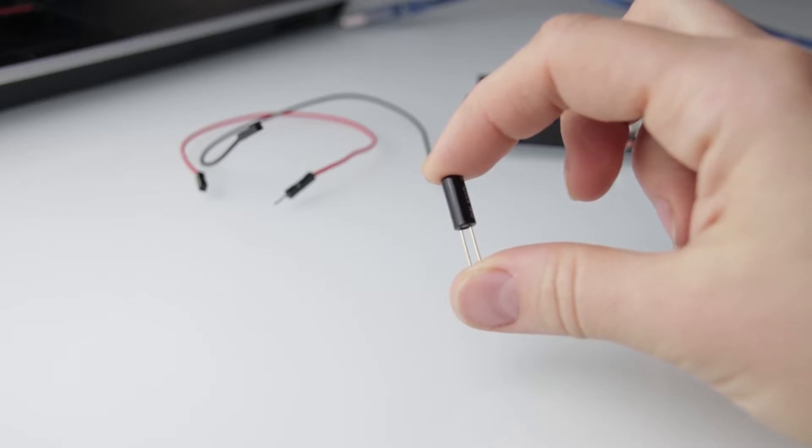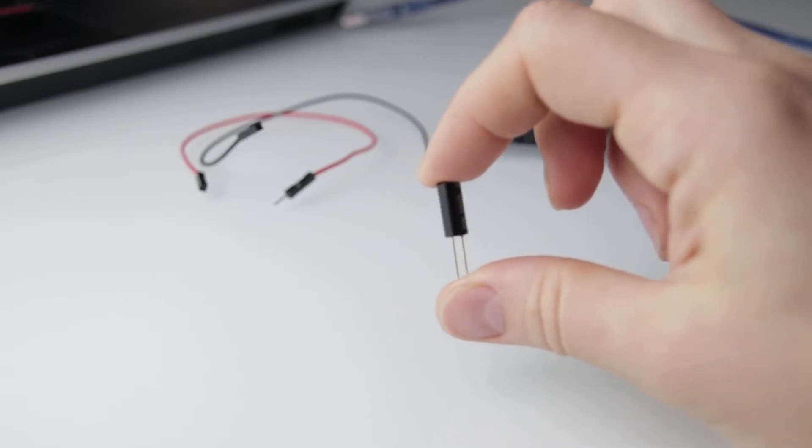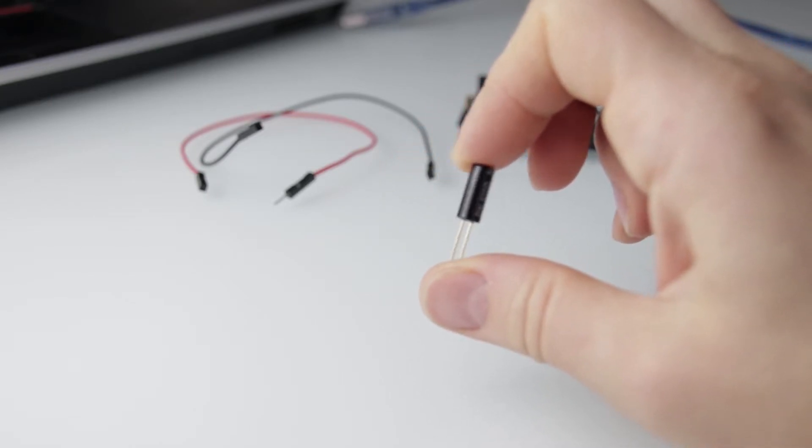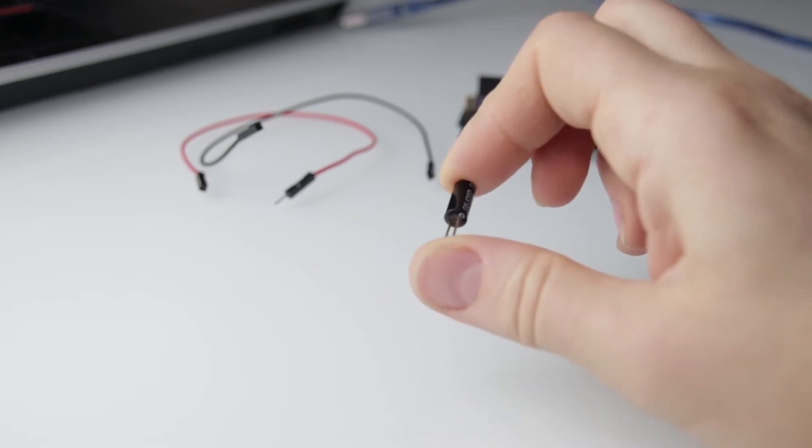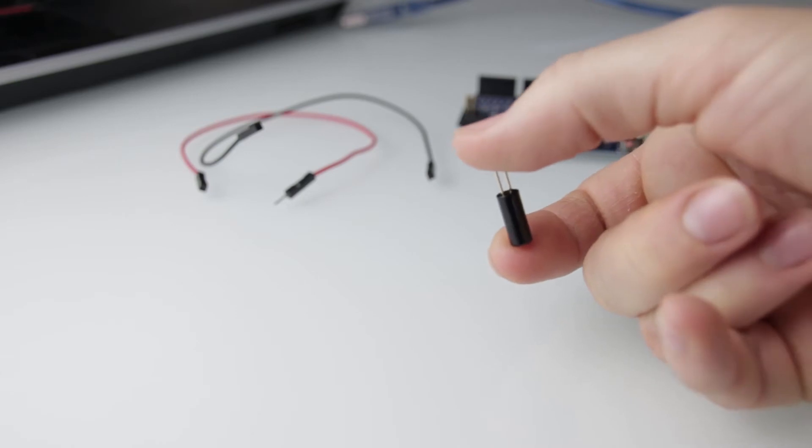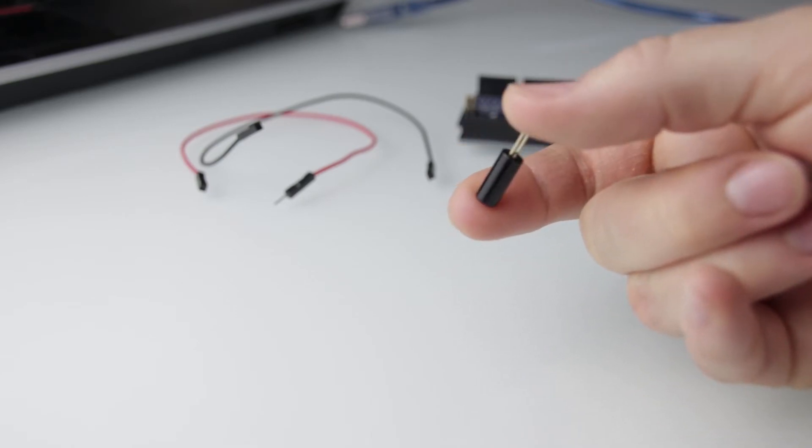The tilt sensor is a component that can detect the tilting of an object. They behave much like the push button we've used in the past, where contacts are conducting when the switch closes and not conducting when it opens.